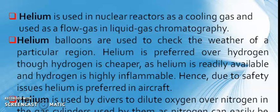Now, uses of noble gases. You know my friend, Helium is used in nuclear reactors as a cooling gas and used as a flow gas in liquid gas chromatography. Helium balloons are used to check the weather of a particular region. Helium is preferred over hydrogen, though hydrogen is cheaper as Helium is readily available and hydrogen is highly inflammable. Hence, due to safety issues, Helium is preferred in aircraft.